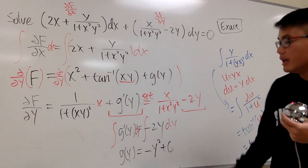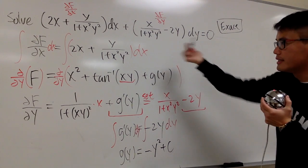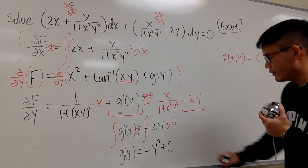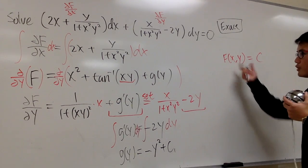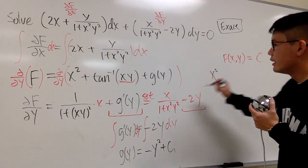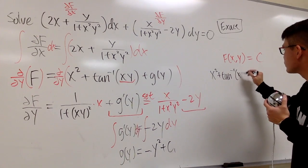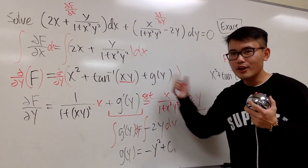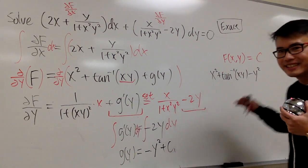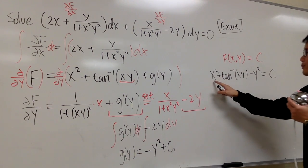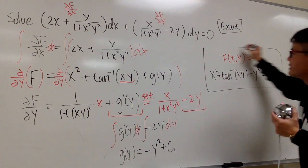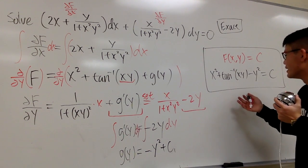We can add plus c here if we like. To write the solution for the exact equation, recall we write F(x, y) = constant. The function part is: x² + arctan(xy) − y² = C. If you want to put x² − y² together first or rearrange, it doesn't really matter. Anyways, this is it.